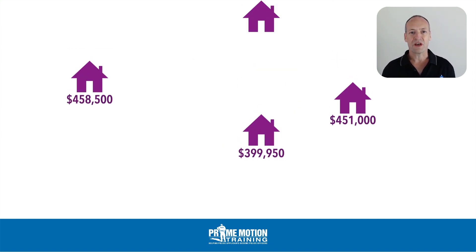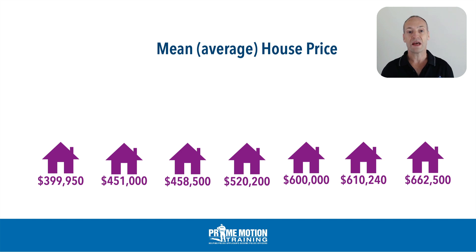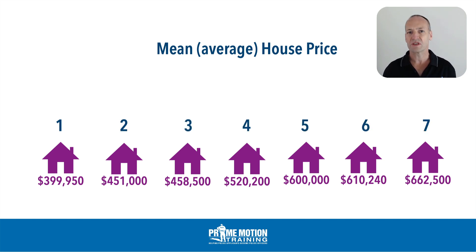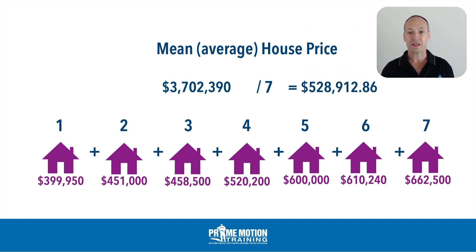Let's keep going with our real estate example. This time we have the same data set, but we're asked to find the mean, or the average — mean means average. This time what we need to do is not sort things in order from lowest to highest, but we need to know how many individual houses were sold. We can count them up — we sold seven houses. Now we need to total the value of all of the houses combined. When we add up the value of all the houses, we get a total of $3,702,390. We then divide that by the number of houses to get $528,912 and a bit. That gives us the mean. Mean means average — just total up everything and divide it by the number of items, in this case houses.